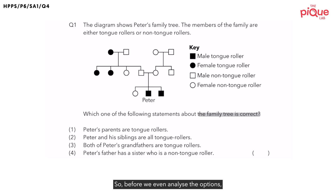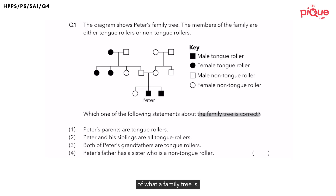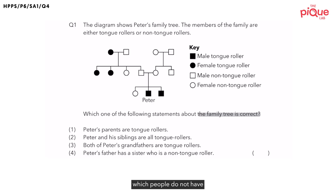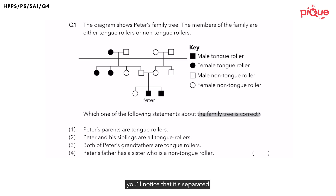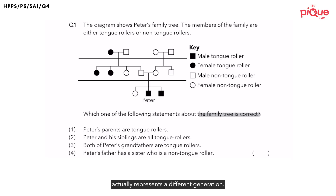Before we even analyze the options, has anyone heard of a family tree before? For those who haven't, let me explain. A family tree just shows you different relationships inside a family, and sometimes they also show which people have a certain characteristic and which people do not. So if we take a look at this family tree over here, you'll notice that it's separated into three levels, and each level actually represents a different generation.